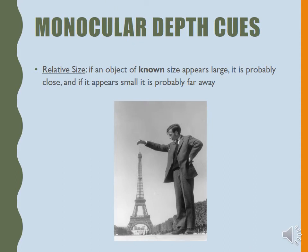If you don't have two eyes for depth cues, you can also use one eye. Monocular depth cues are used heavily in art for us to determine that a two-dimensional picture actually has three-dimensional qualities. You can close one eye and still determine depth. The first monocular cue is relative size — if an object of known size appears large, it's probably close to us, and if it appears small, it's probably far away.